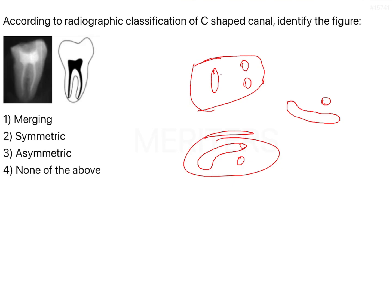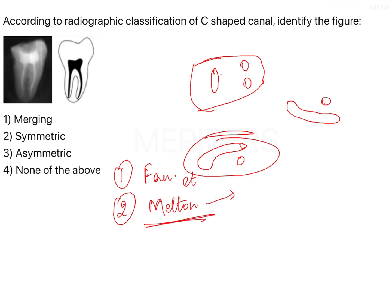Two people worked extensively on understanding C-shaped canals: one was Fan et al. and the second was Melton. Melton was the first person who described C-shaped canals and gave a classification with type 1, type 2, and type 3. Fan et al. later added two more types: type 4 and type 5.